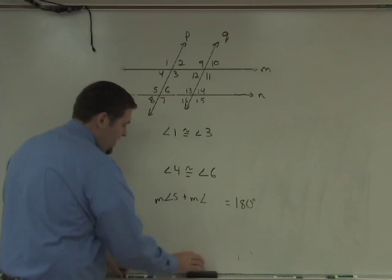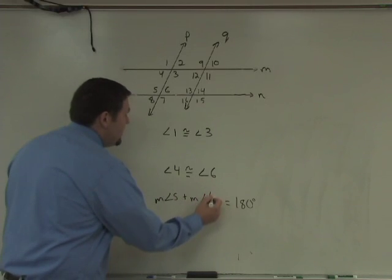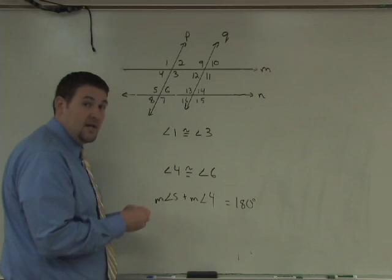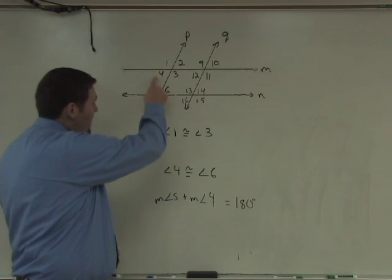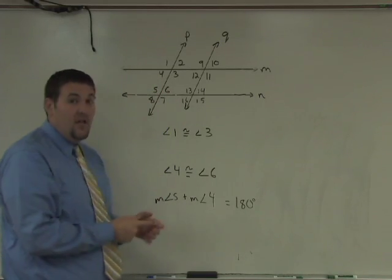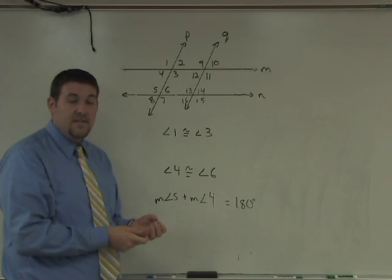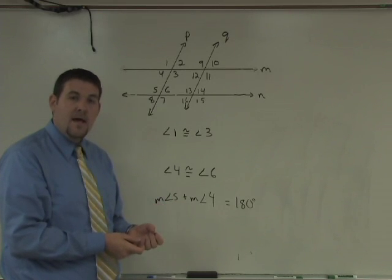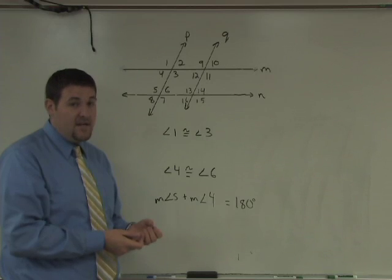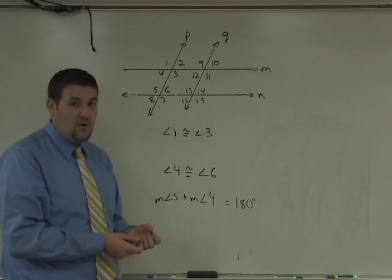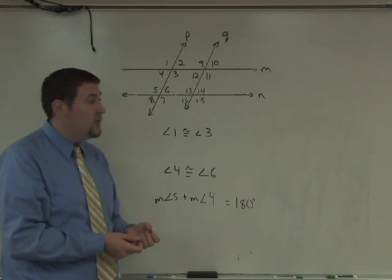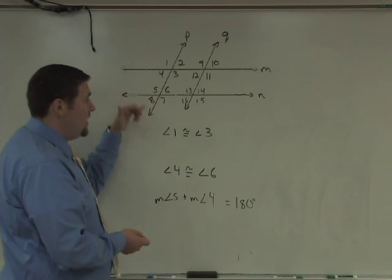I can change this then to the measure of angle five plus the measure of angle four summing to 180. If four and five sum to 180, those are interior angles on the same side of the transversal. And by our converses, if interior angles on the same side of the transversal are supplementary, we can conclude that lines M and N are parallel.